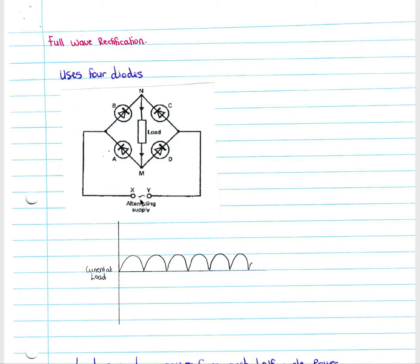If we have an alternating supply and the current moves from Y to X, we follow the current — it can't move here because it would not flow through the diode, so it flows up. It would not flow here either because it cannot flow through the diode, so it'll flow down through the load. It would not flow back to Y, so therefore it goes past A and back to X.